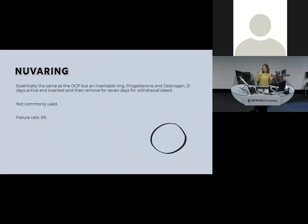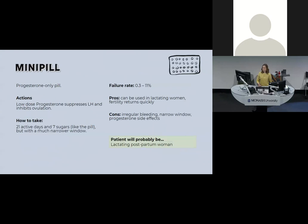NuvaRing is like the COCP but is a flexible ring inserted into the vagina — it works the same way with both hormones, lasts 21 days, then is removed for a withdrawal bleed. Its failure rate is about 9%. The mini-pill is progesterone-only — 21 active days, 7 sugar days — but has a narrower 3-hour window, making the average failure rate a bit higher. Pros: can be used in lactation and fertility returns quickly. Cons: irregular bleeding and progesterone side effects. It's typically given to a postpartum lactating woman, but not to someone who's very forgetful.